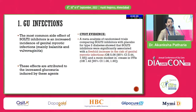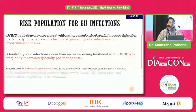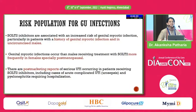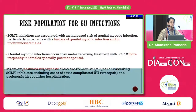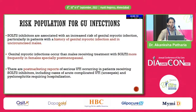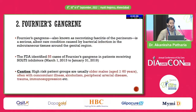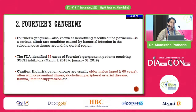GU infections are quite common. CVOTs have found a five-fold increase in the risk of genital mycotic infections. Those more predisposed include uncircumcised males, elderly males unable to maintain hygiene, and post-menopausal females due to estrogen deficiency. Post-marketing surveillance confirmed the same. Fournier's gangrene, though only 55 cases registered by the FDA over six years, is quite deadly, with risk factors including elderly males who are alcohol-dependent, or have peripheral artery disease or peripheral neuropathy.